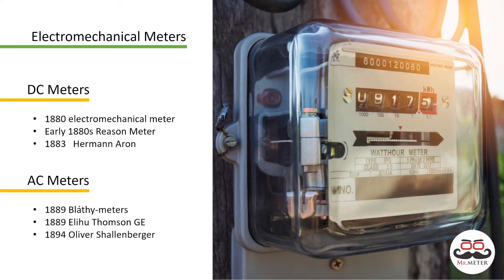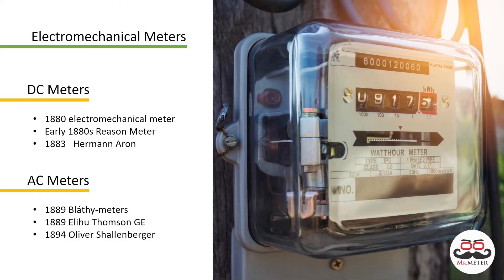Electromechanical meters are of the old meter designs when technology wasn't that advanced. The very first meter in this category was DC meters, designed based on the power grid which also was DC current. We owe Thomas Edison for creating the first DC power grid. The early mechanical meters worked much differently — the first designs had a big metal disc which connected the incoming current to the consumer input, and over time the metal disc became oxidized. The grid inspector would record the disc weight and the weight difference would indicate consumption. The early meter was made in 1880.